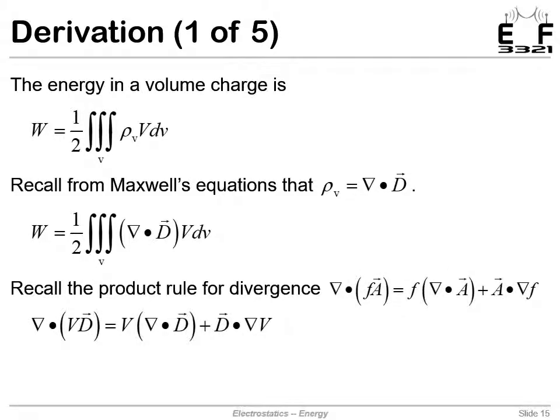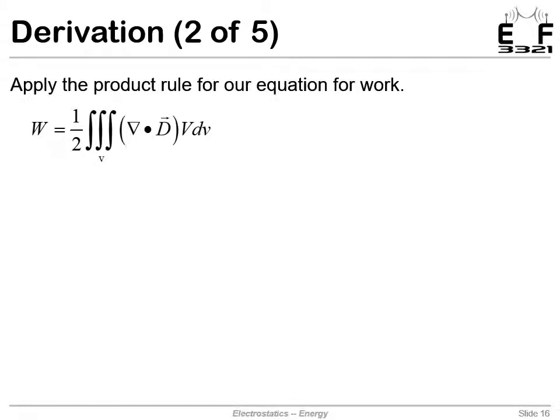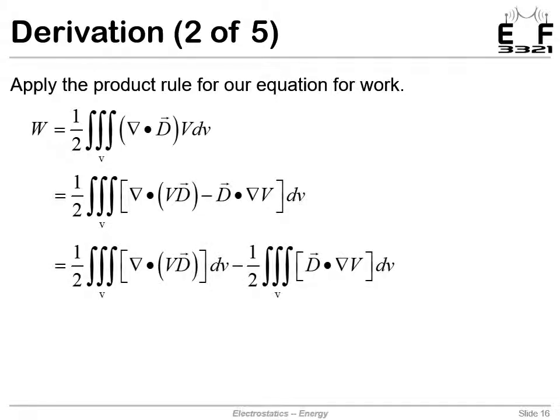Remember the product rule from vector calculus? The divergence of a scalar times a vector, when both are functions of position, equals this. That was the product rule. If we replace F with V and a with D, we get this equation. What we'd like to do is replace this expression in our energy integral. That's this term. We'll solve our product rule for that term and get this. Then we can replace this del dot D times V with these two terms. There is our integral from the previous slide. We replace that expression coming from our product rule, and divide this into two separate integrals.